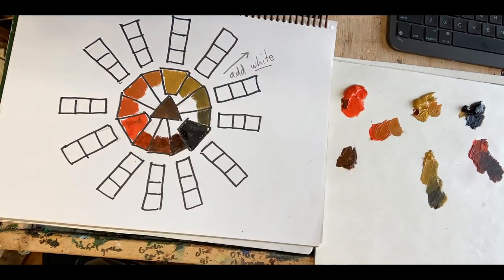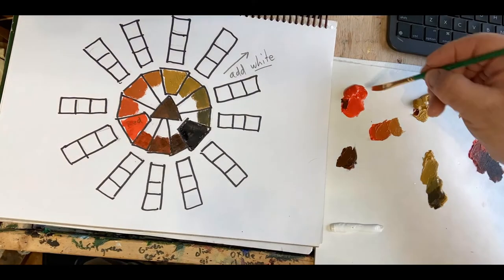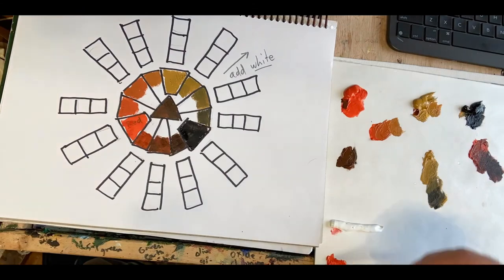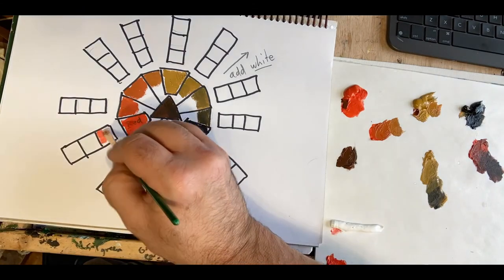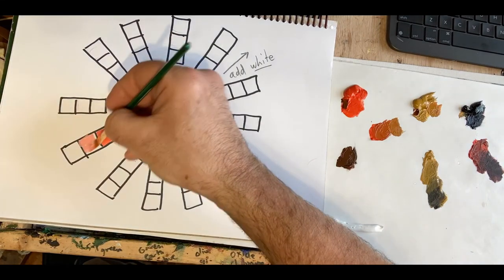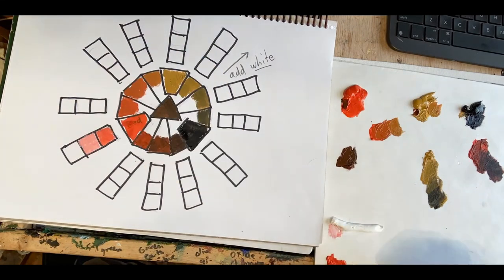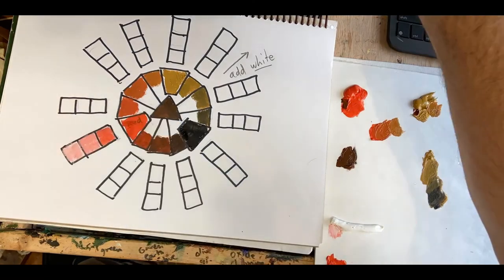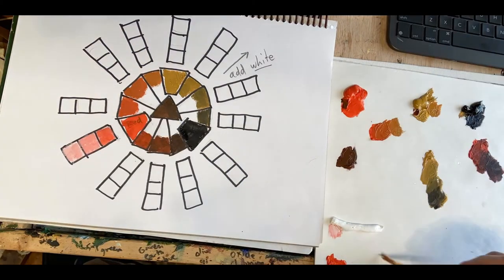Now I can add some white to my palette so I can start to add some tints to the outer part of my Zorn color chart. It's very important to remember to do all of your color mixing on your palette, not on the color chart. A tint is when you add white to a color. So I start with my three basic colors and I add white to them.